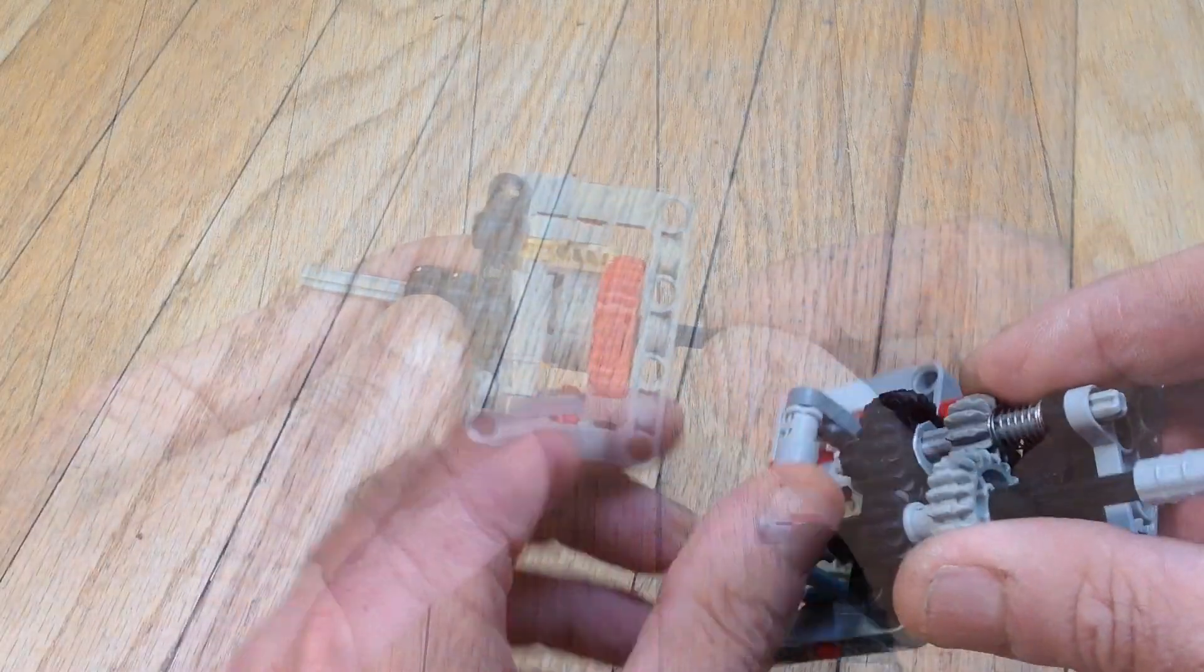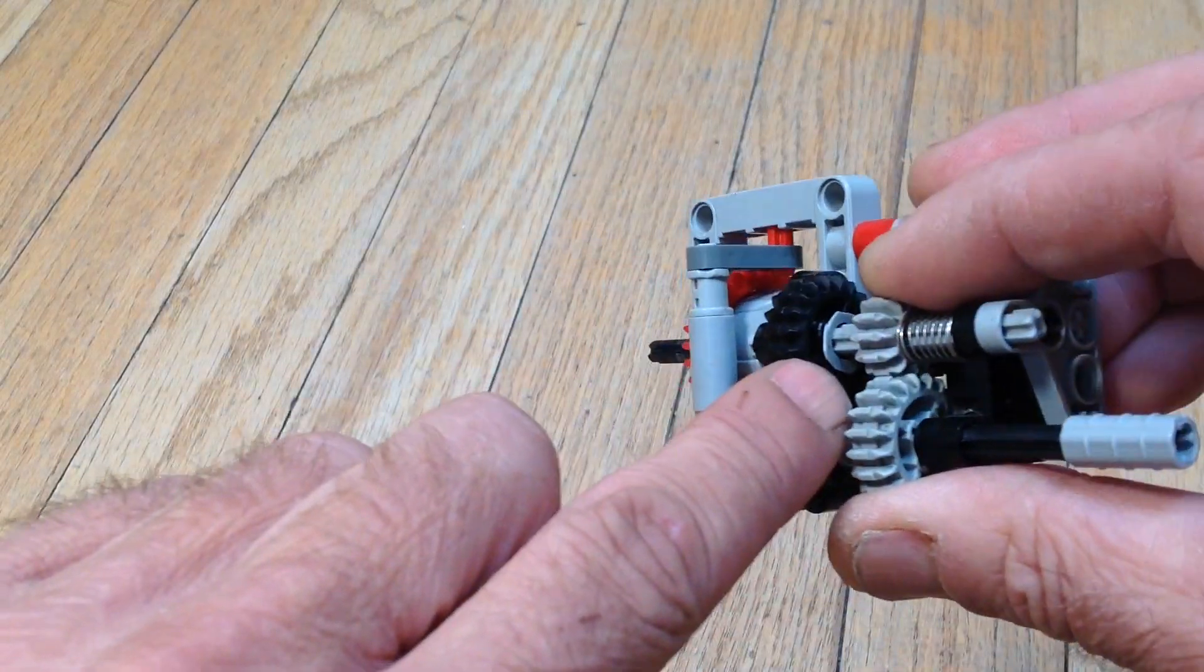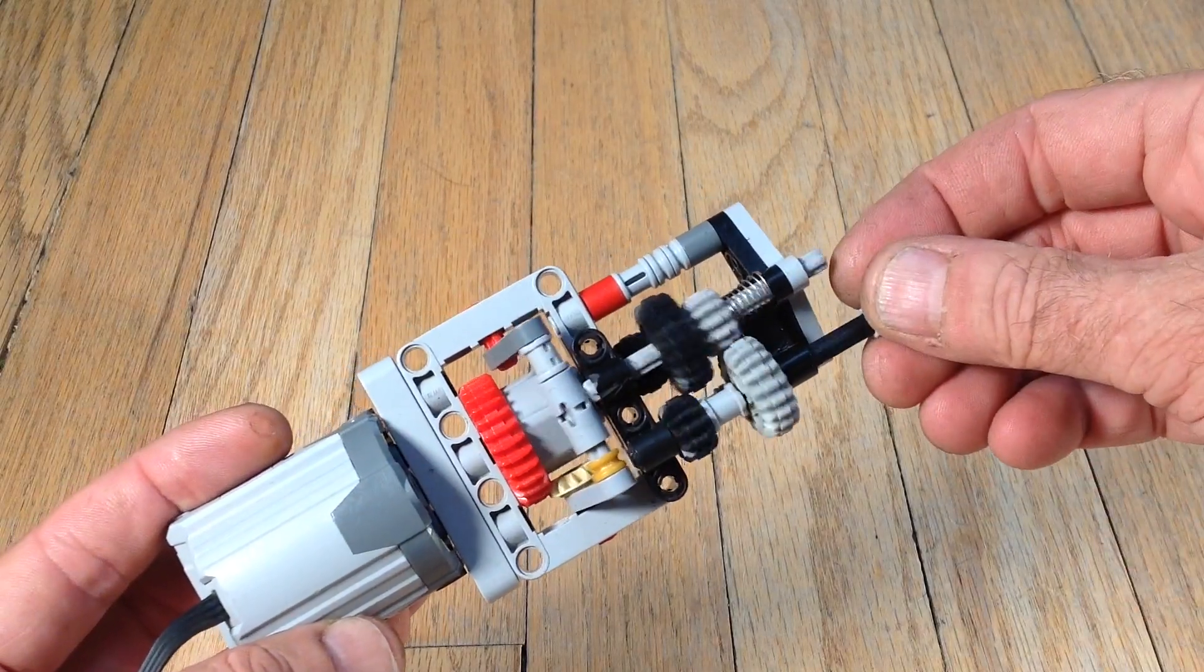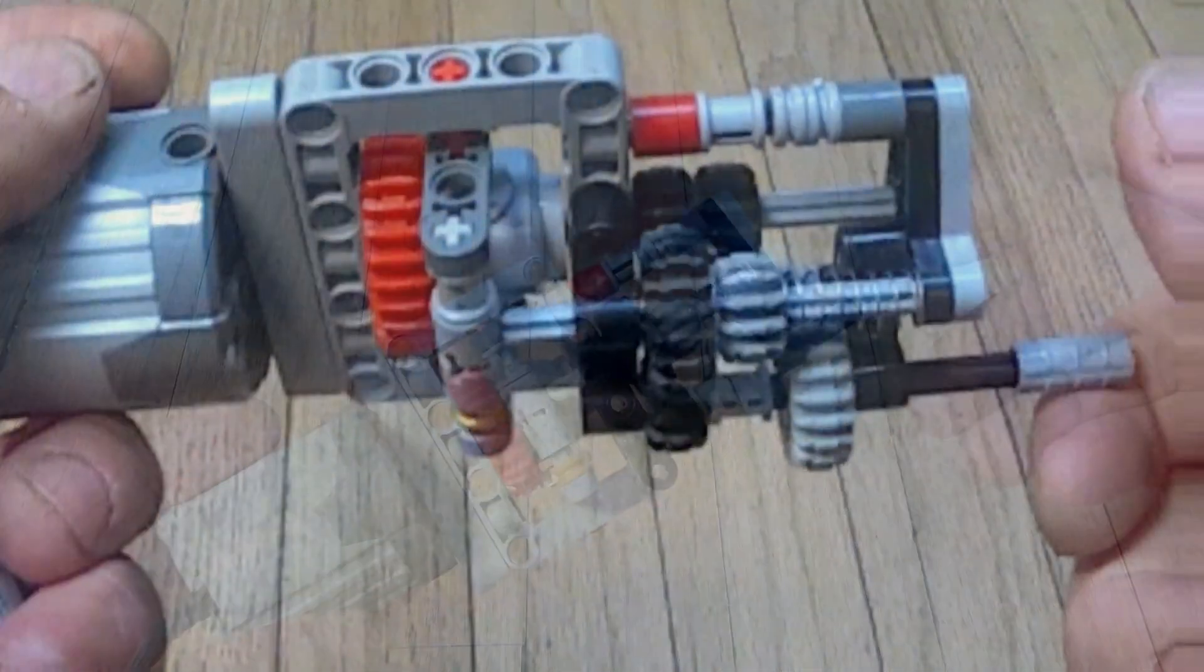I found that if I put a little plastic spacer in between these two gears, it would shift more reliably. Here's some slow-mo of it shifting.